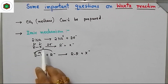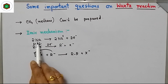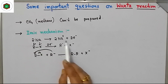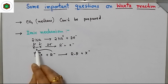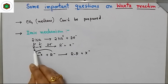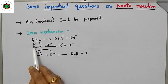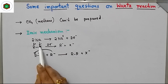For the ionic mechanism: two sodium atoms each liberate one electron to form two Na⁺ and two electrons. Now due to electronegativity difference between R and X, carbon has partial positive charge and X has partial negative charge.